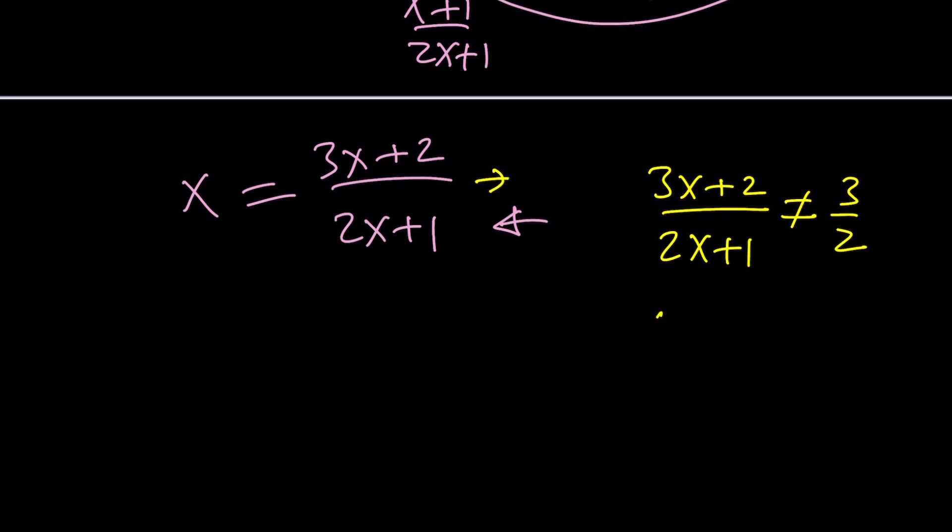You know why? Because if it is 3 halves, you get 6x plus 4 equals 6x plus 3, which has no solution. Nonsense. Garbage. Right? Forget about it. That's why this expression cannot be 3 halves, but it can be anything else. Anything you want it to be.